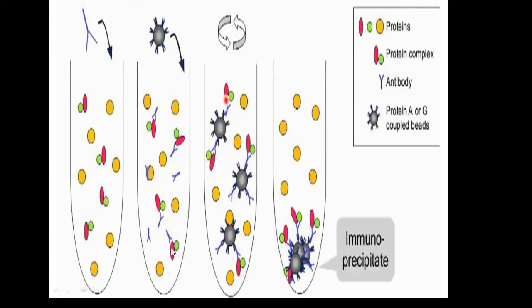Let us discuss how co-immunoprecipitation works. Cell lysates are prepared under non-reducing conditions. The benefit of non-reducing conditions is that protein-protein interactions are retained and not broken off. When we lyse the cell under non-reducing conditions, the proteins are released from the cell, and we add our antibody which is specific to one of the proteins.